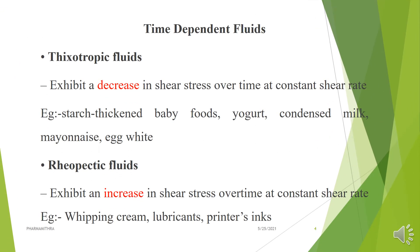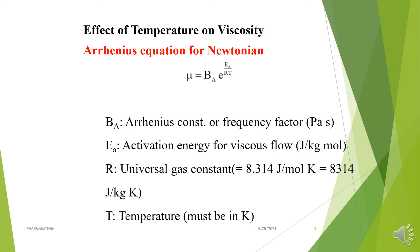In this chapter we also come across thixotropic and rheopectic fluids. Thixotropic fluids exhibit a decrease in shear stress over a constant shear rate, while rheopectic fluids exhibit an increase in shear stress at a constant shear rate. Examples of thixotropic fluids include mayonnaise, egg white, baby foods, and yogurt. Examples of rheopectic fluids include whipping cream and lubricants.